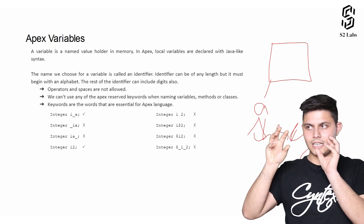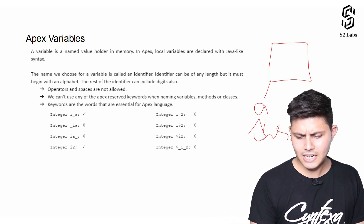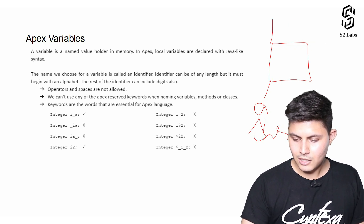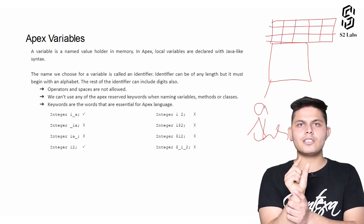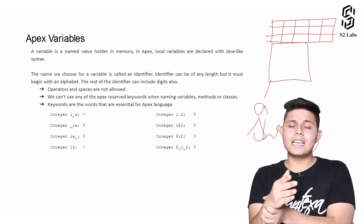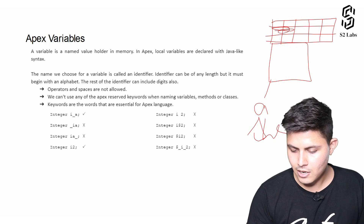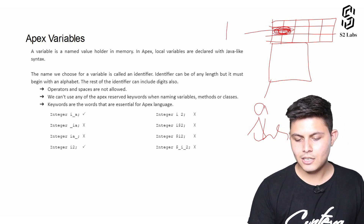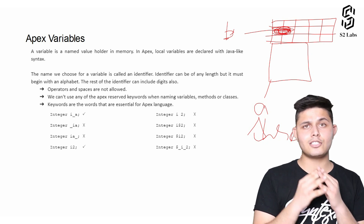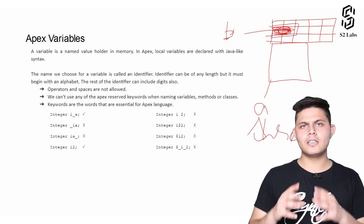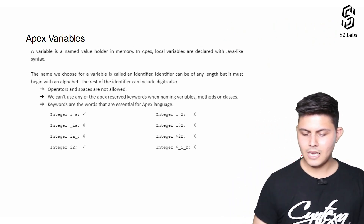Whatever data you want to store should have a name. Data gets stored inside a database, which has different chunks of information. To refer to a particular chunk, we use a variable — that is exactly what a named value holder is. So if you assign the name 'b' to a block, then 'b' is the variable in which the data is stored inside that particular space in the data storage.